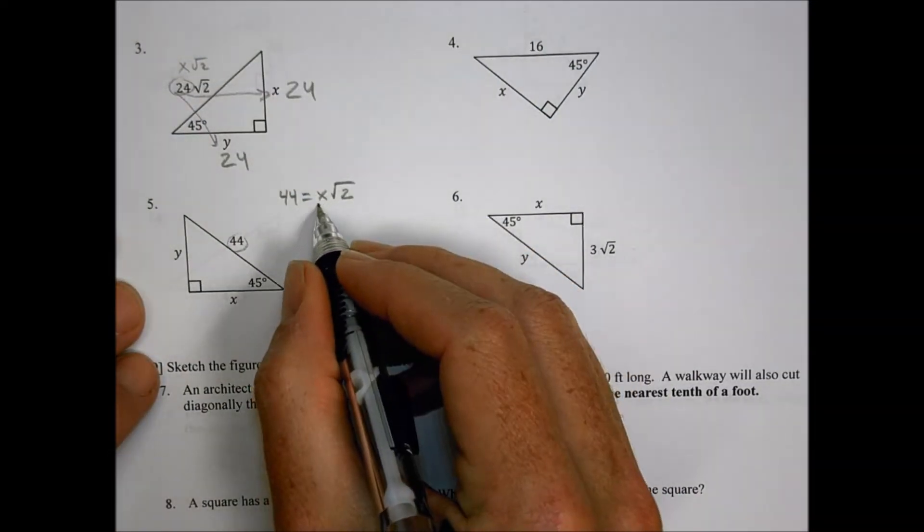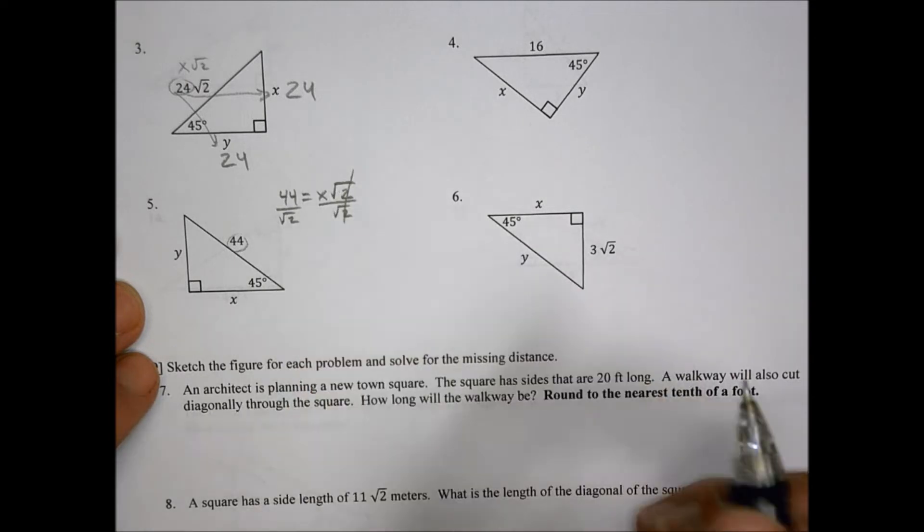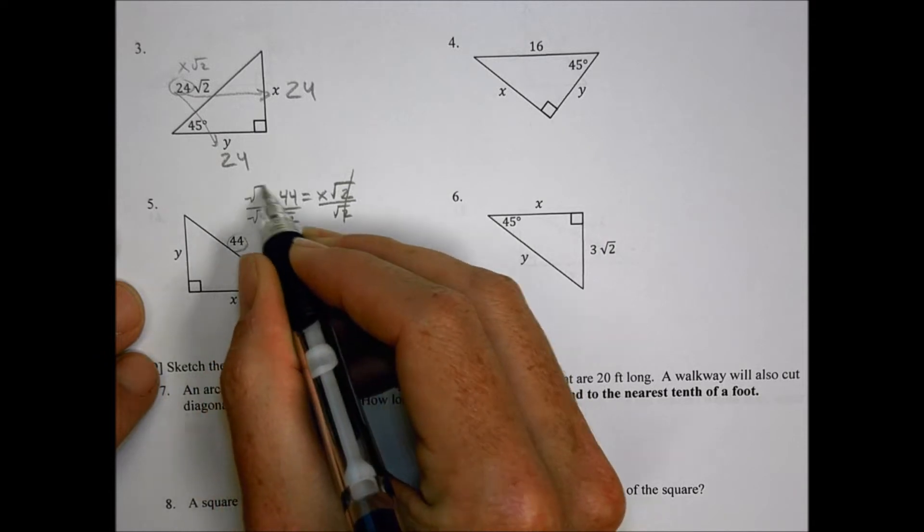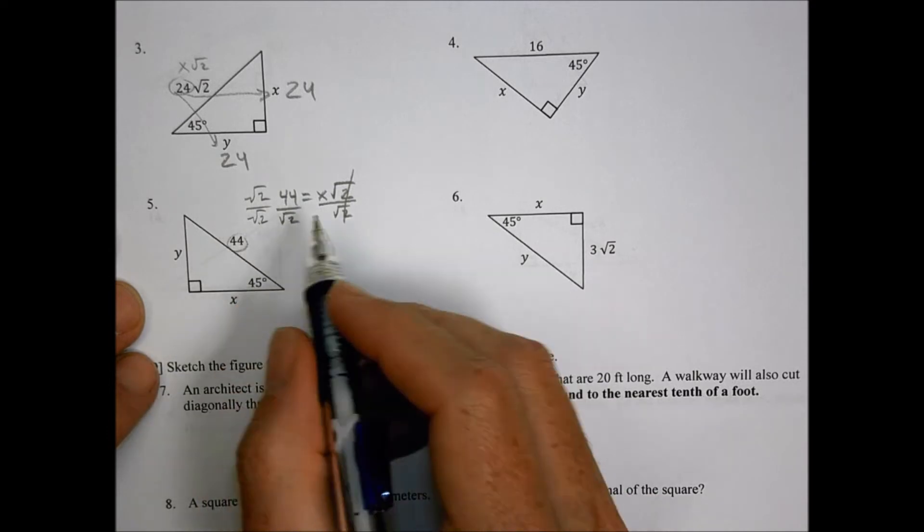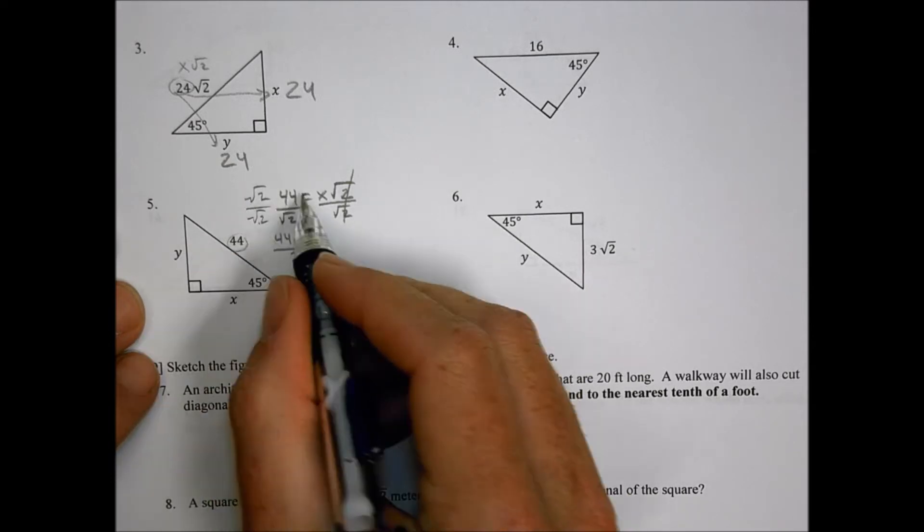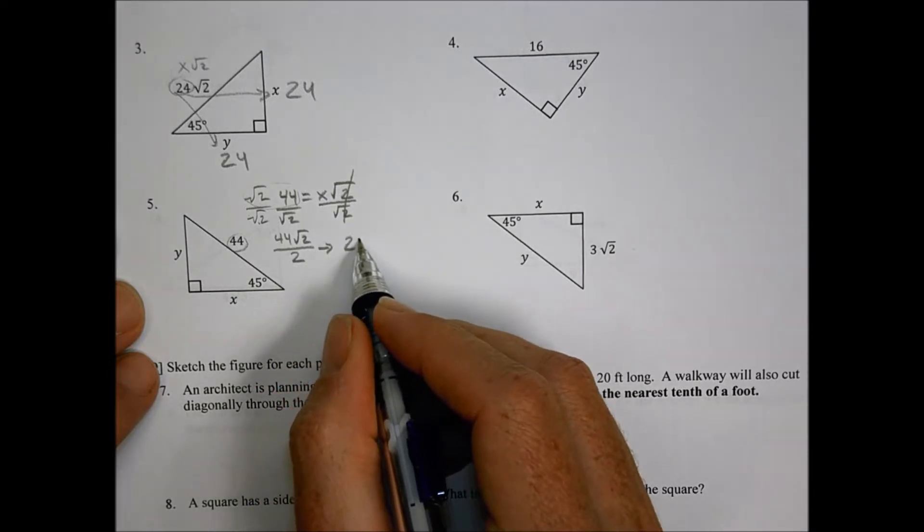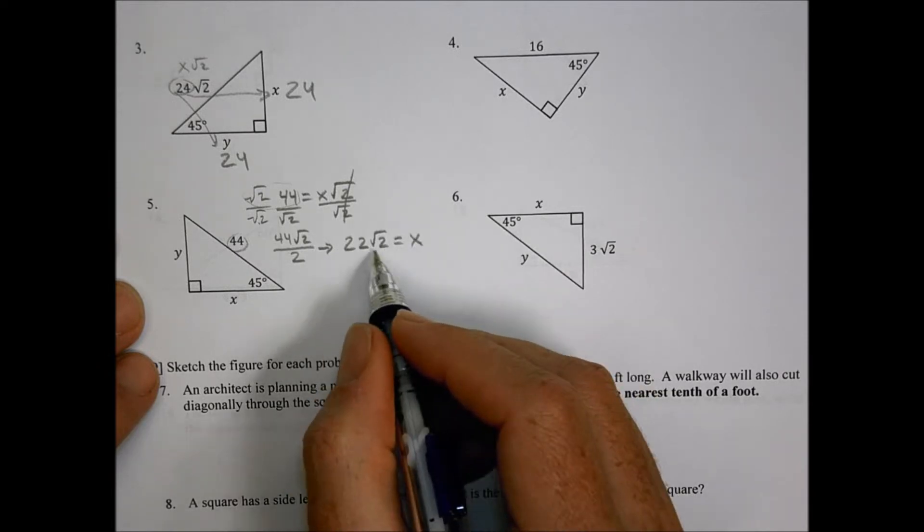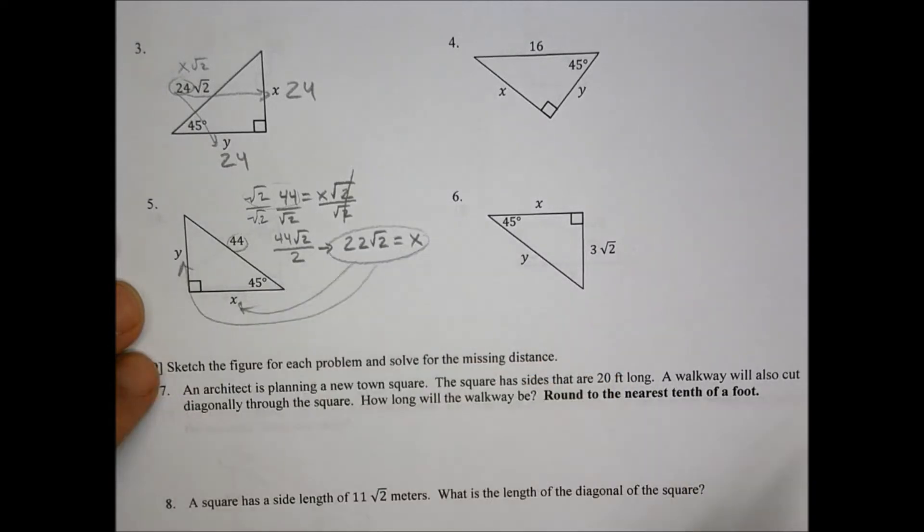So 44 is our X root 2. So we can solve for X by dividing both sides by a radical 2. So I have this 44 over root 2 equals X. I can get rid of the root 2 by multiplying top and bottom by root 2. Root 2 times root 2 is going to be equal to 2, and on the top I have 44 root 2. 44 divided by 2 is equal to 22, and I keep the radical by itself. So my X value is actually 22 root 2, and that's what I would use for both X and also for Y.